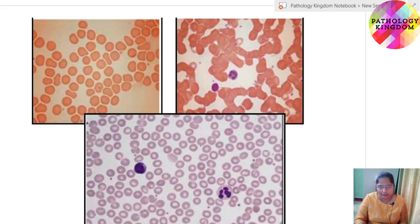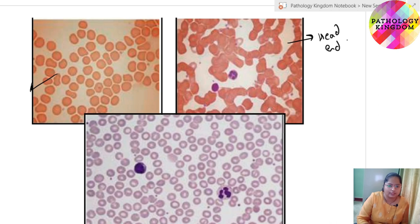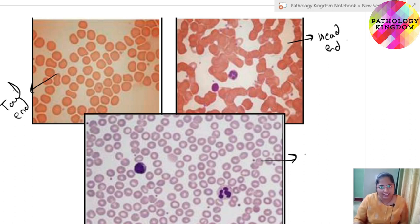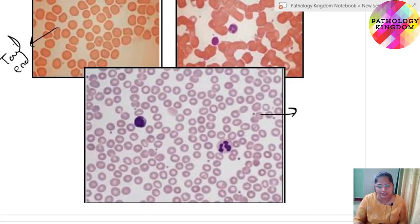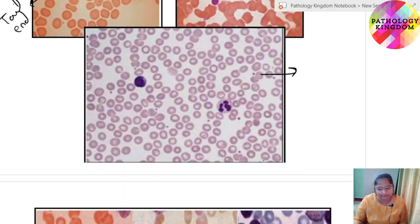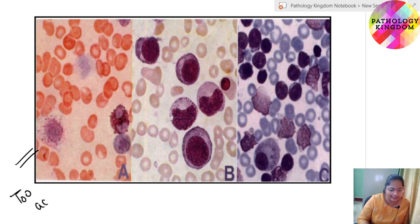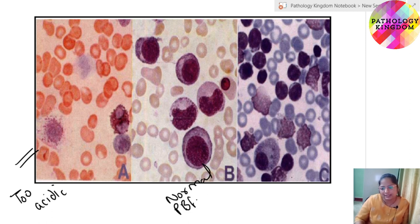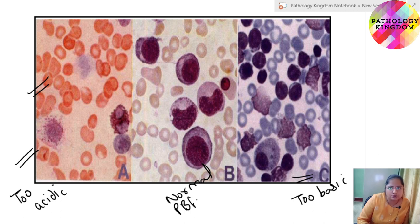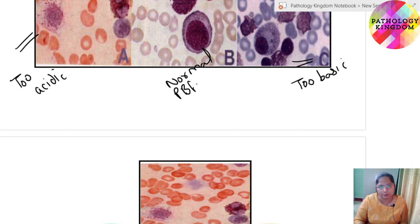These are the slides again showing the area of examination. Now, these are PBFs showing staining issues: the first one shows the stain is too acidic, this is the normal stained PBF, and in this one the stain is too basic. You get a bluish picture if the stain is too basic and a pinkish picture if the stain is too acidic, which will lead to inappropriate reporting.